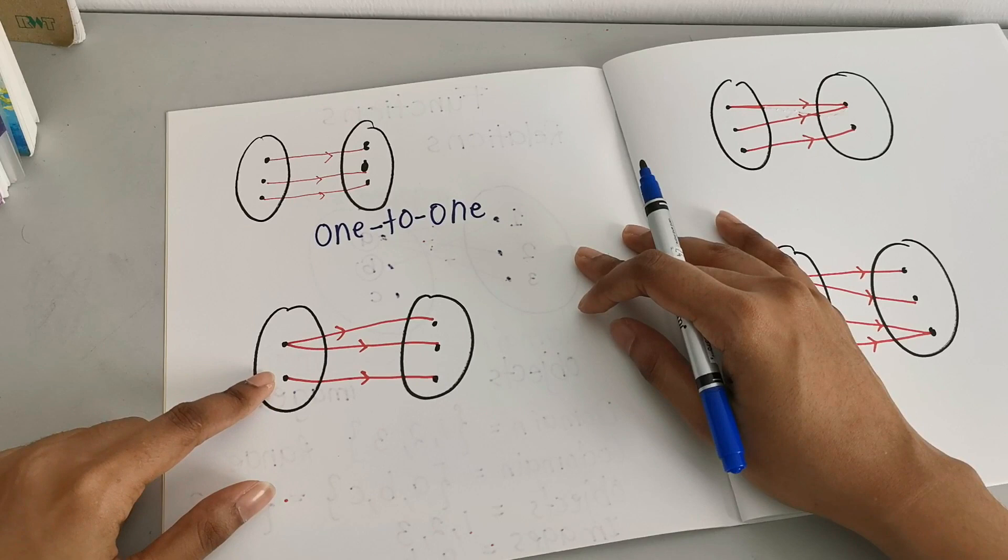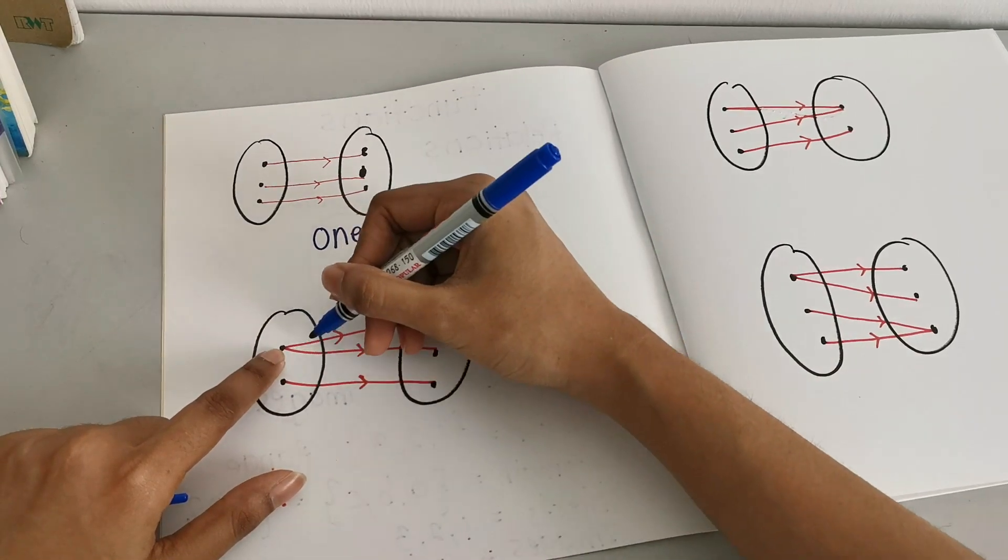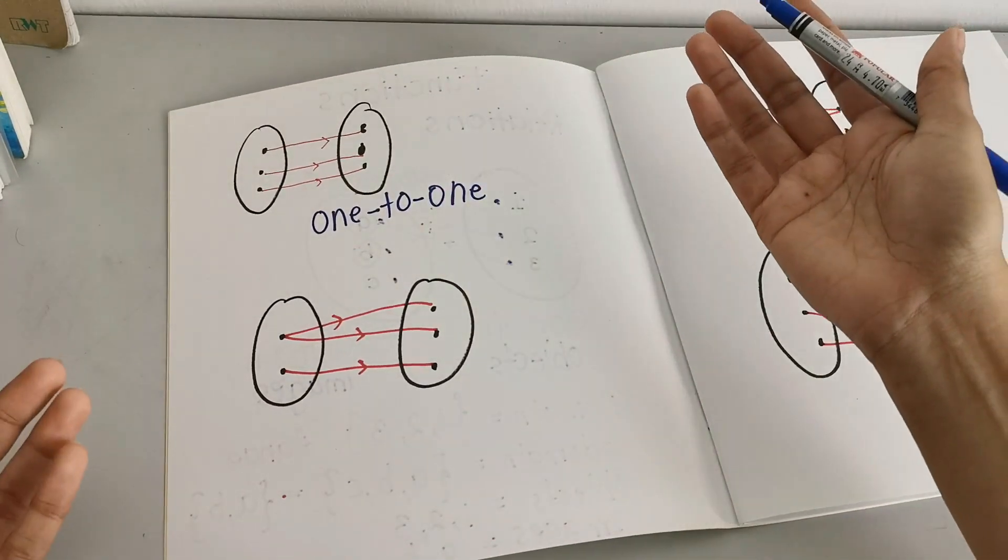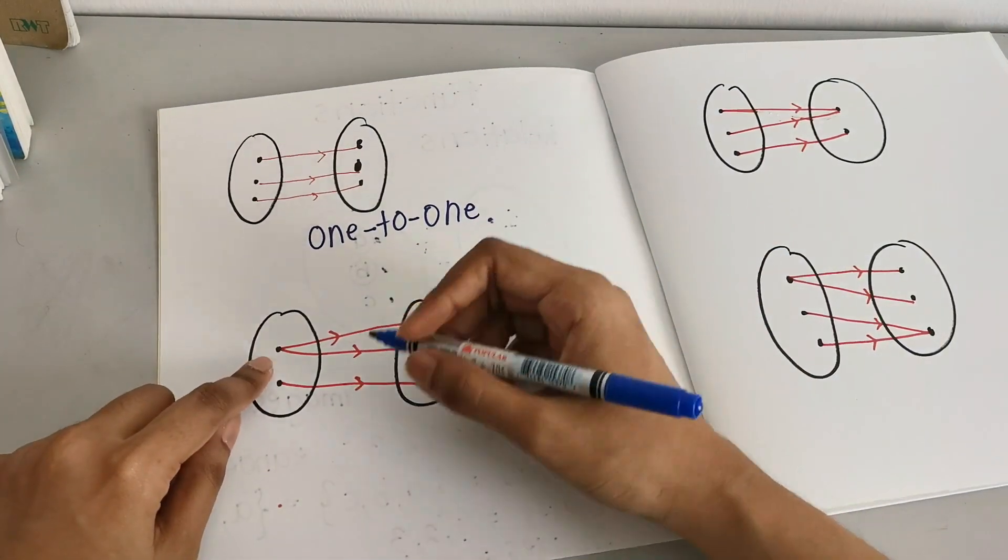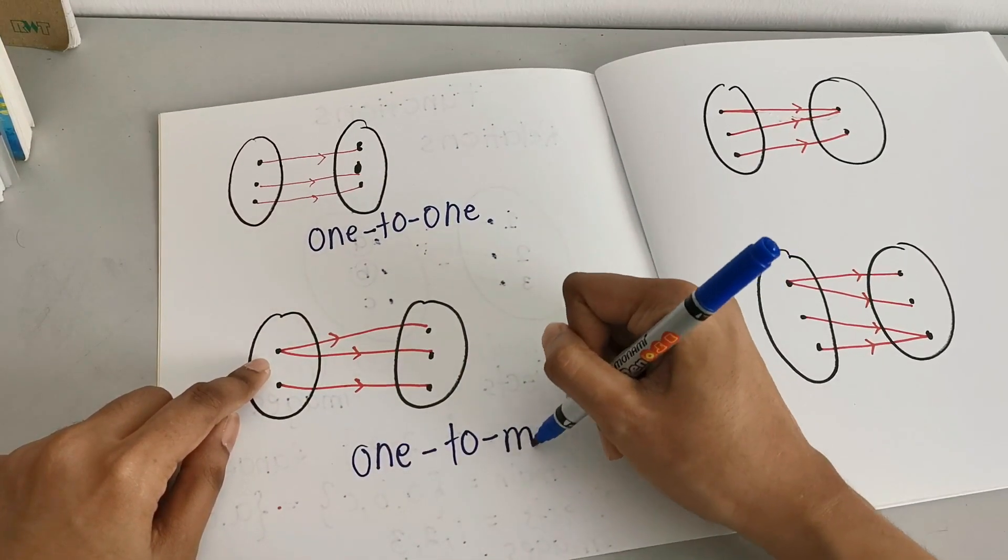Now the next one here, you can see that there is 1 object and it's mapped to 2 images. So 2 is already considered many. So here, we state this relation as 1 to many.